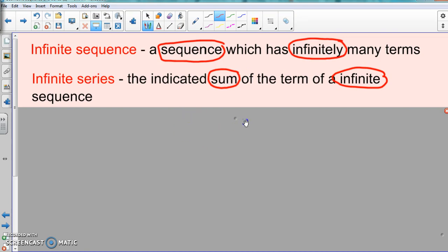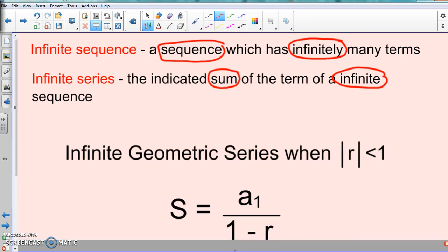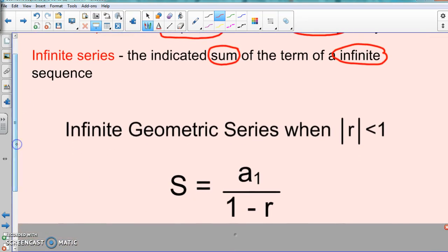So with these, these are your two definitions that are new. Let's go to the actual formula that they give for you, and again this is on that formula sheet that you will have for the final exam. Here's the formula: infinite geometric series when the common ratio's absolute value is less than 1.